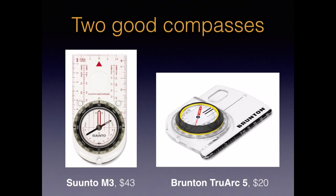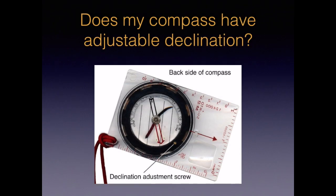Two good compasses that both have adjustable declination are the Suunto M3, my favorite, and a newcomer, the Brunton TrueArc 5. These are both available at REI. Some of you may already have a compass but you're not sure if it has adjustable declination. Here's one way to hopefully tell: turn your compass over and look for a small screw on the back side. If you have one, this is where you adjust the declination with a tiny screwdriver or a knife tip. If you don't see a screw, your compass probably does not have adjustable declination.